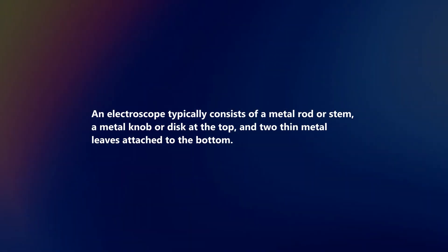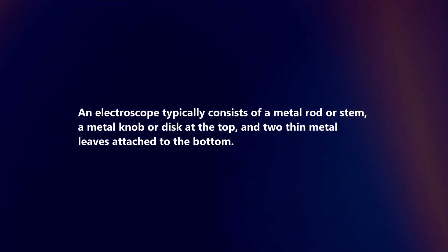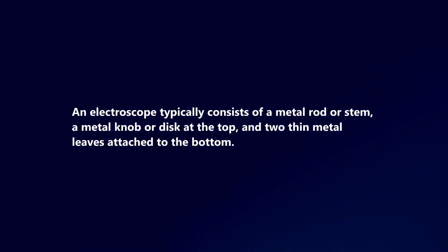An electroscope typically consists of a metal rod or stem, a metal knob or disc at the top, and two thin metal leaves attached to the bottom.